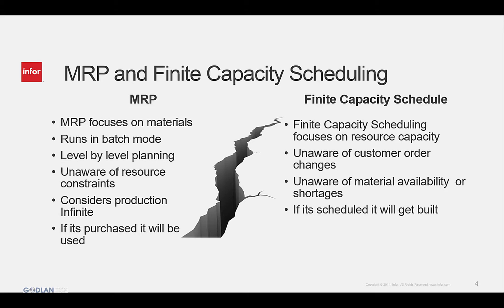Compounding the problem, none of the MRP or Finite Schedule data is visible to the customer service team, so they are running blind and cannot give customers decent information. Likewise, if the customer changes the order date, this information must trickle down to MRP and to scheduling, starting the painful process all over again.